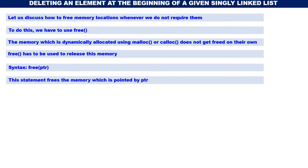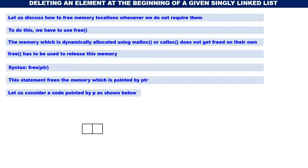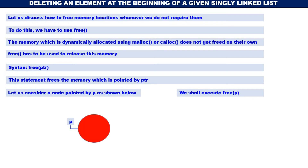The statement free(ptr) frees the memory which is pointed by ptr — whatever memory chunk ptr is pointing to will be freed. Let us consider a node pointed by p. We have a single linked list node pointed by p, and we execute free(p). Whatever memory location is pointed by p will be freed, meaning that memory location will be returned back to the operating system.